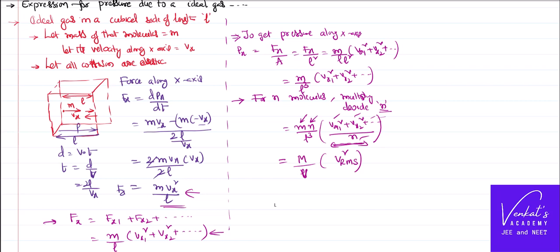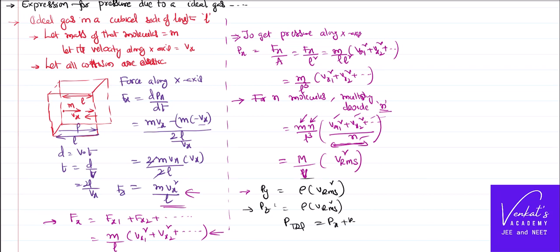This is the pressure only along the x-axis. Similarly, we get the pressure along the y-axis as ρ × Vrms_y², and pressure along the z-axis as ρ × Vrms_z², because gas molecules behave identically in all directions. The total pressure is the sum of pressure along x, y, and z axes, and all of them are identical in nature.